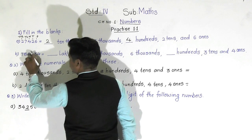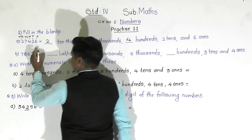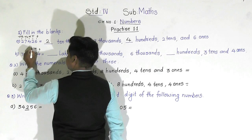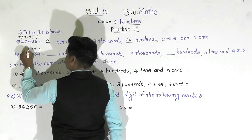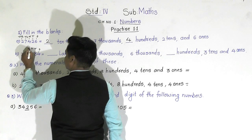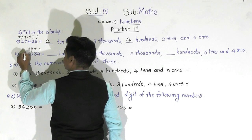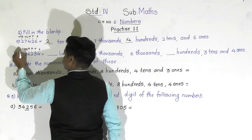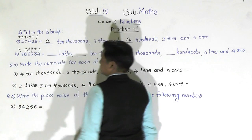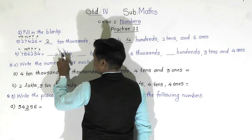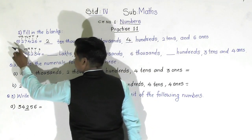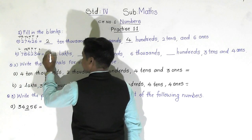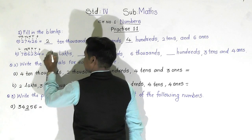In the next example, the number is seven lakh eighty-six thousand two hundred thirty-four. Let's write the places: ones, tens, hundreds, thousands, ten thousands, and lakhs. At the lakh place there is seven, so it will come here as seven.